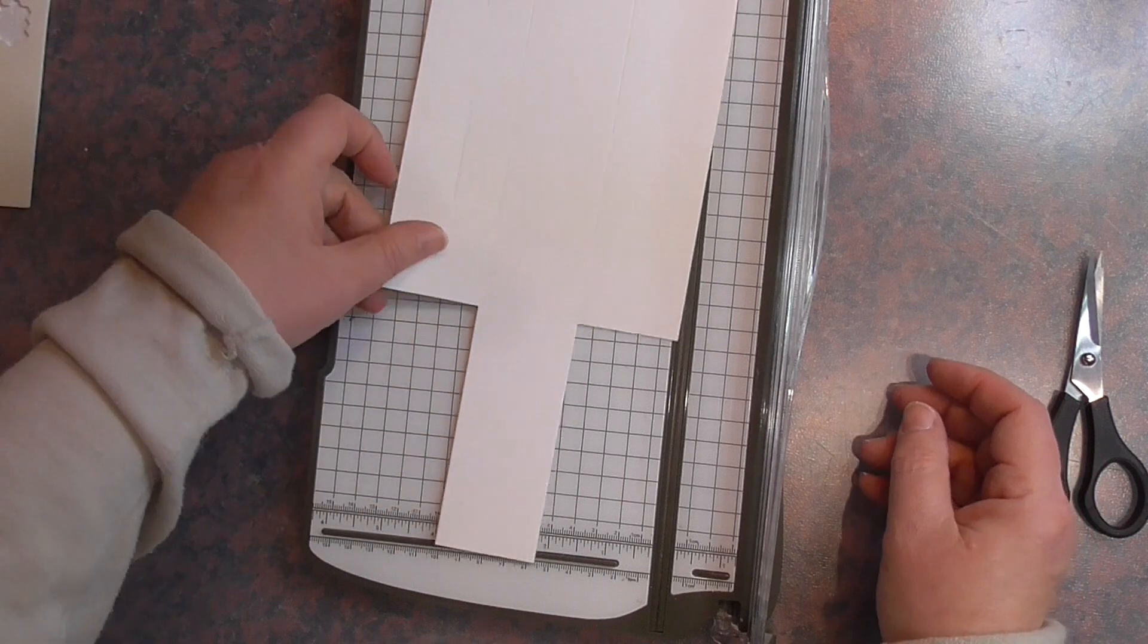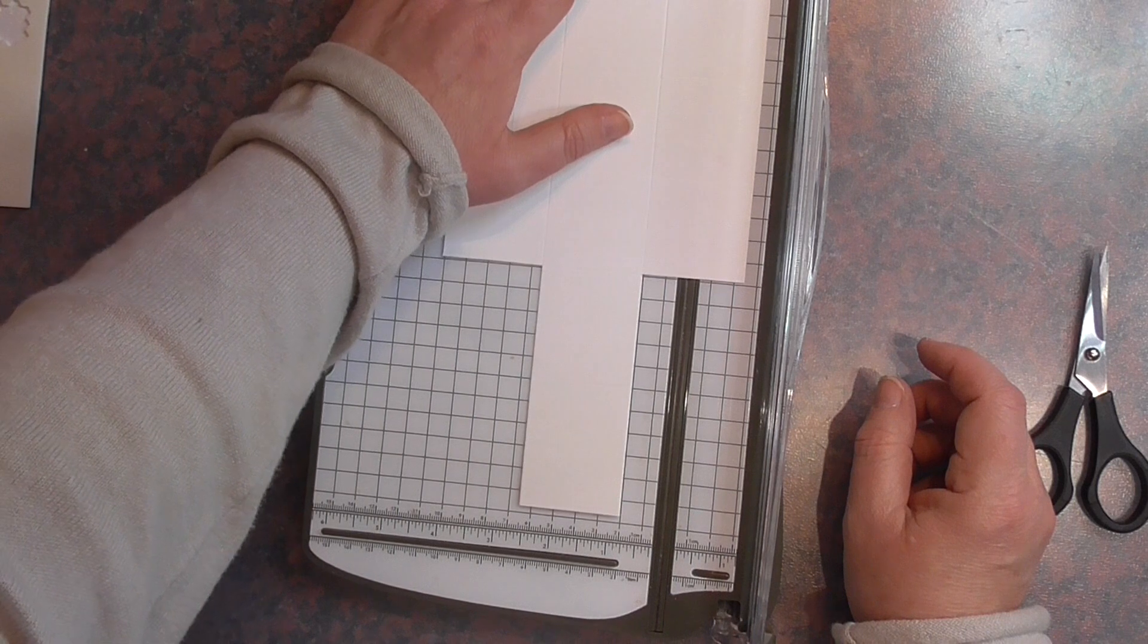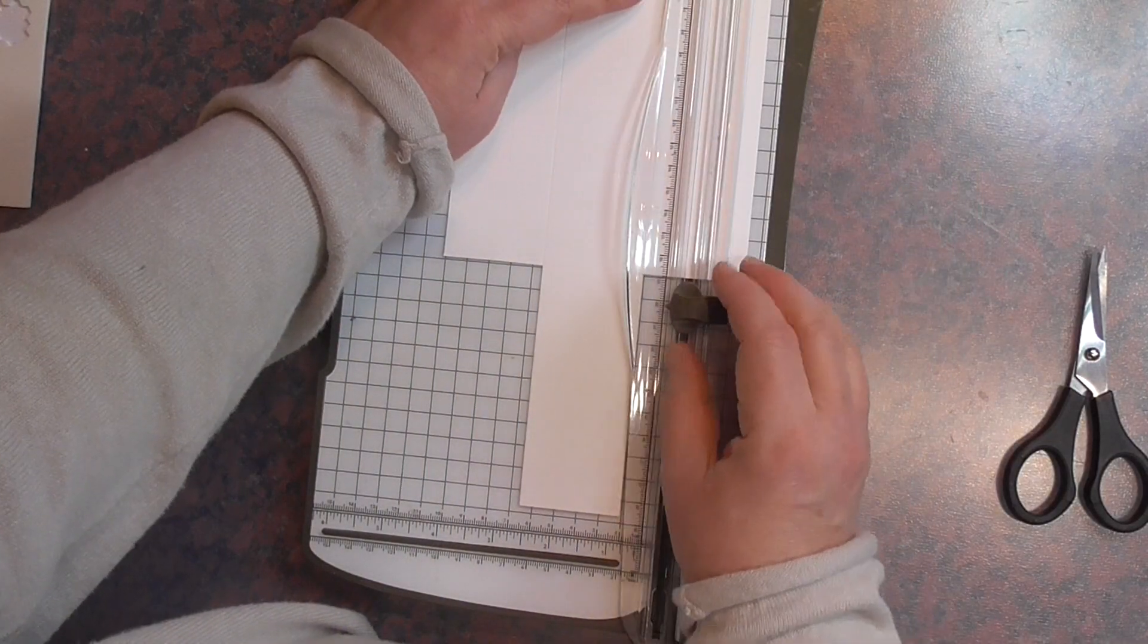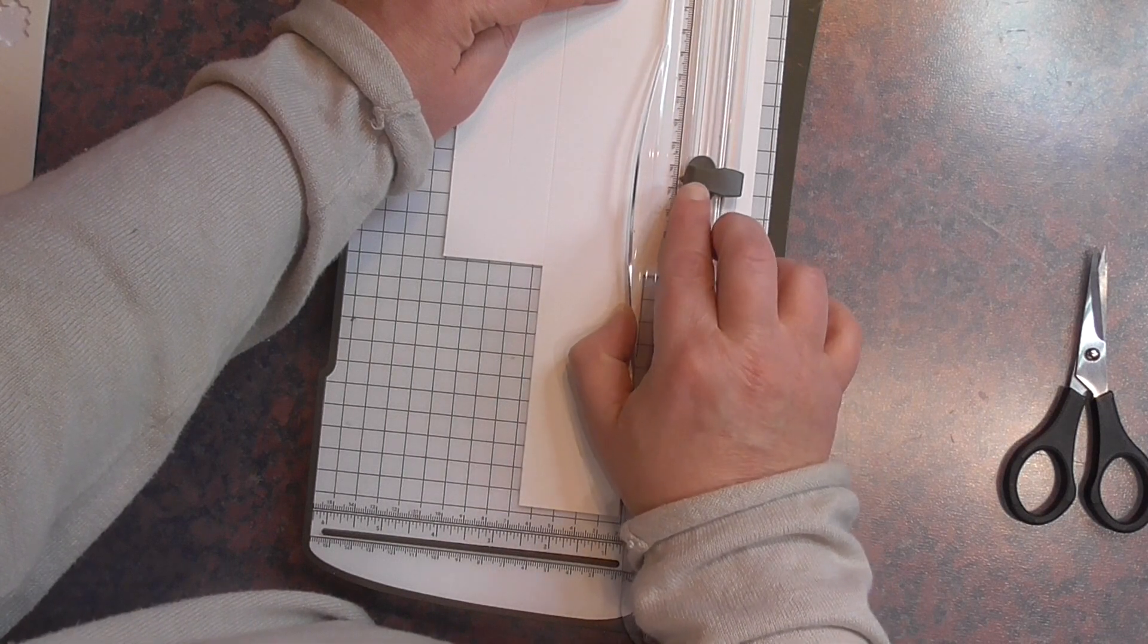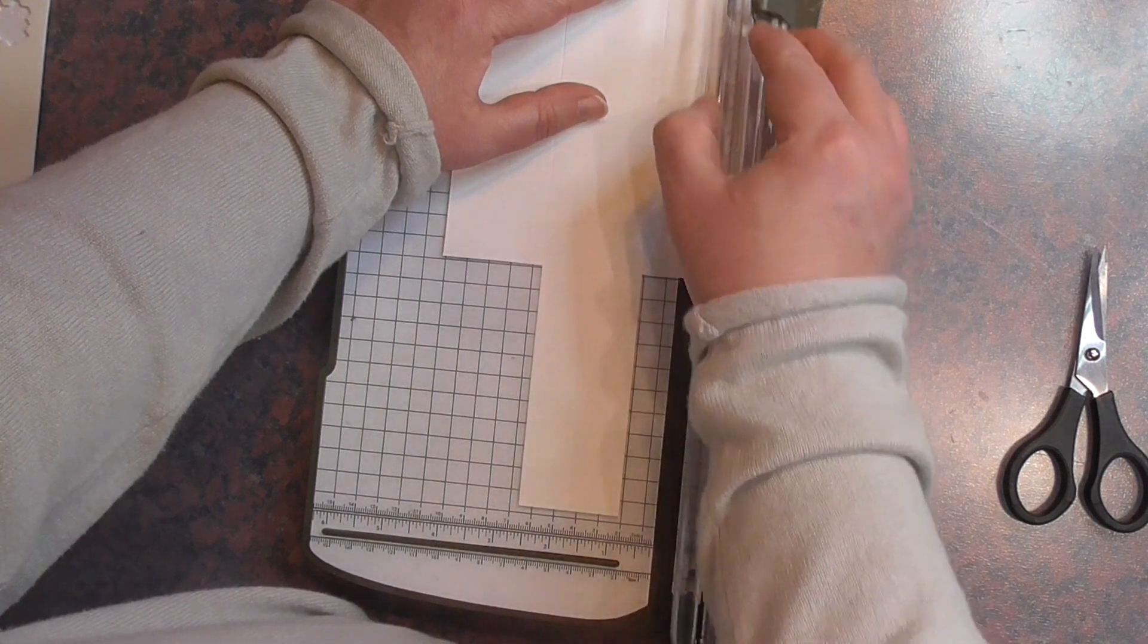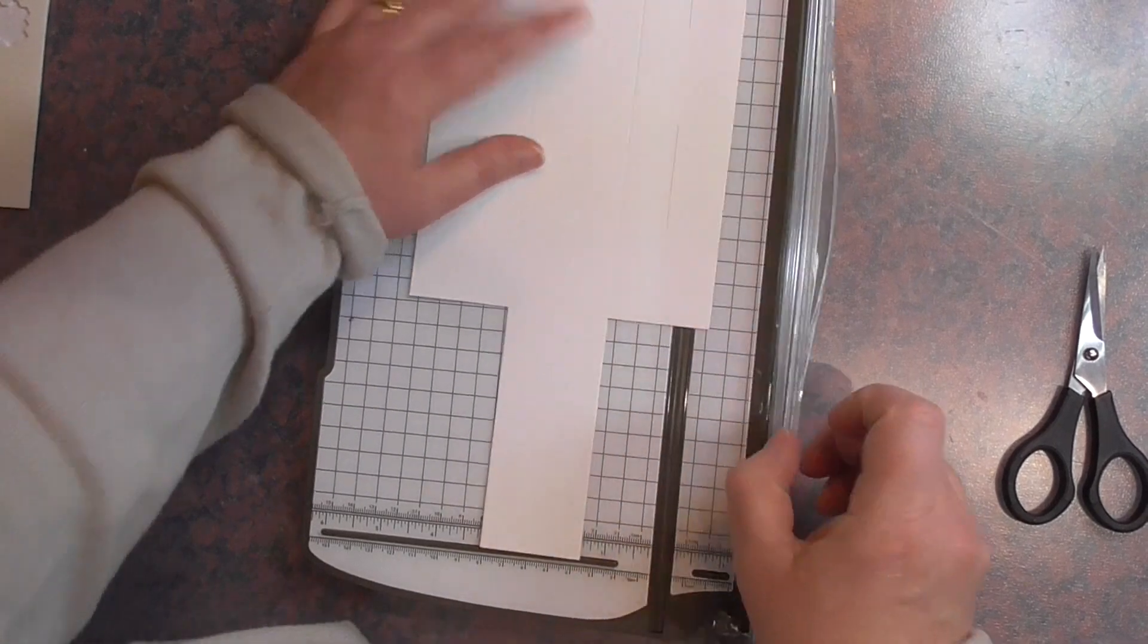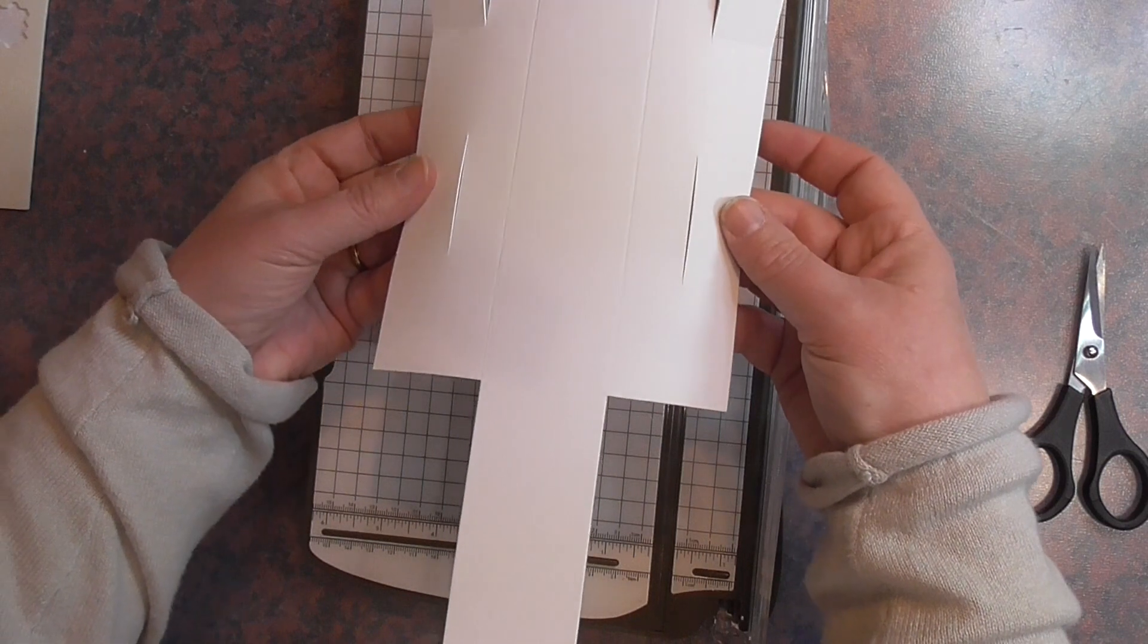Then if you turn it around, do the same on the other side at two and a half centimeters. So if you bring the blade back this way this time, first of all you're going to put it onto, moving from the bottom upwards on the bottom score line up to the second score line. Then lift it, place it on the third score line and cut all the way to the end. So you should have two cuts here and two cuts here.